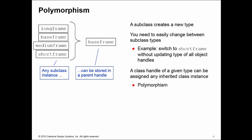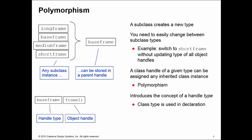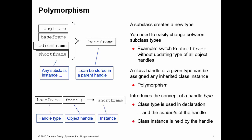Polymorphism states that if you have a handle of the base frame type, it can contain an instance of base frame or any subclass of base frame. This introduces the concept that an object has a handle type — the type used in its declaration — but it can also have a contents type. So a handle can point to an area of memory that contains an instance of a subclass of base frame, as well as base frame itself.